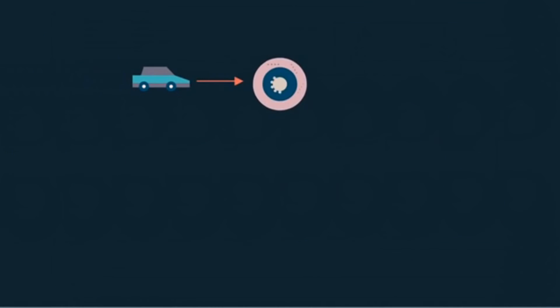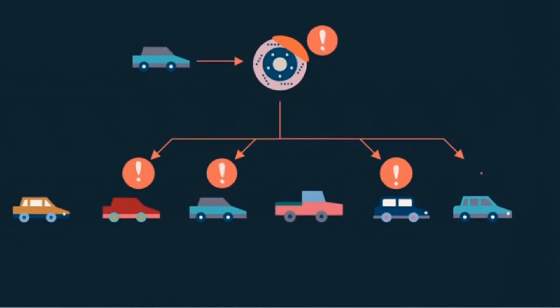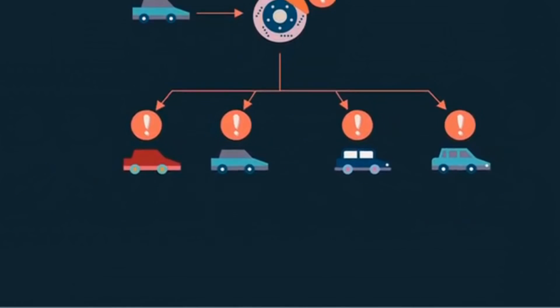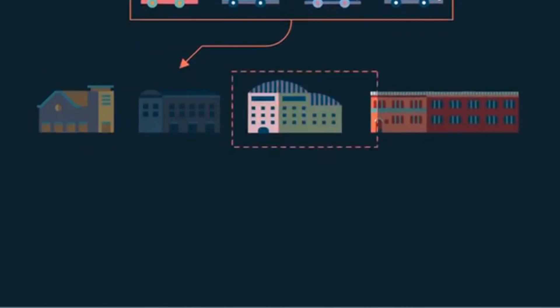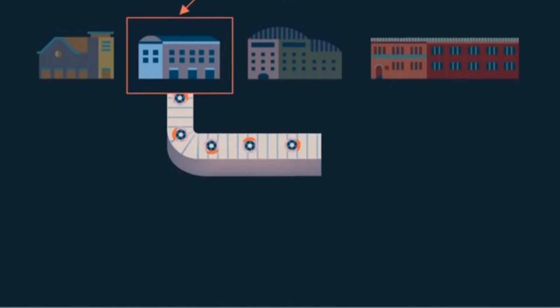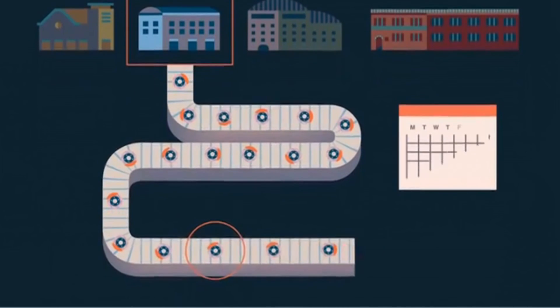If the same problem in her brake line crops up in a critical number of other cars, the manufacturer uses applications custom-built for the automobile industry to pinpoint the exact problem. They can see if these cars were made at the same factory, used the same parts, or came off the assembly line on the same day.